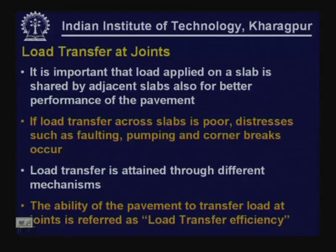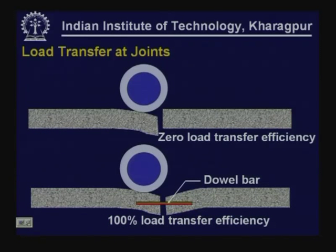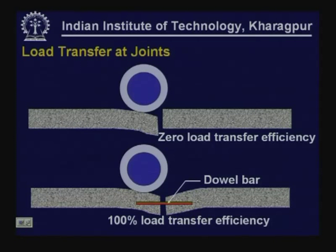Load transfer can be attained through different mechanisms — some already discussed, like granular interlocking and through dowel bars. The ability of the pavement to transfer load at joints is referred to as load transfer efficiency. The load transfer efficiency can be explained with two diagrams. In the diagram shown above, the load is placed on the left-hand side with no connection between the two slabs — obviously the slab on the right-hand side is not participating in sharing the load. This is a situation where there is zero load transfer efficiency.